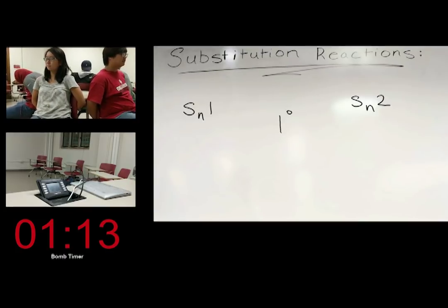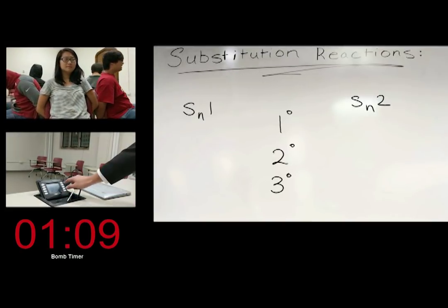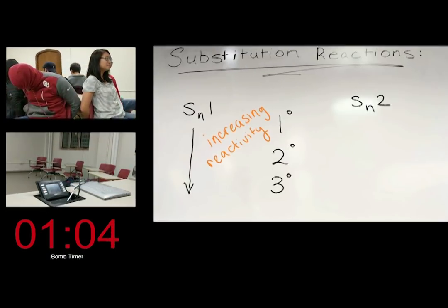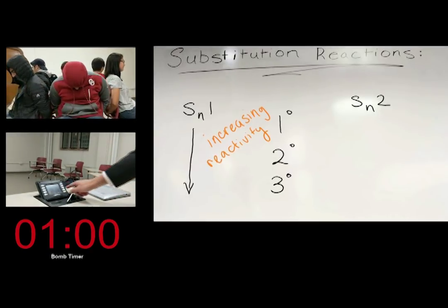The reactivity rate of the substitution reaction is also dependent on the type of alkyl halides. For SN1 reactions, tertiary alkyl halides are favored most, because the tertiary carbon can stabilize the carbocation formed during the first step of the process.